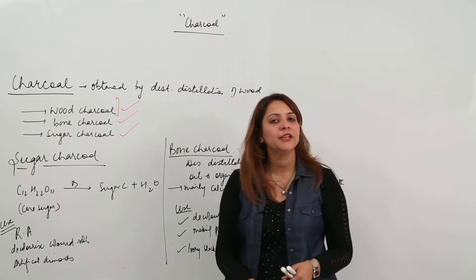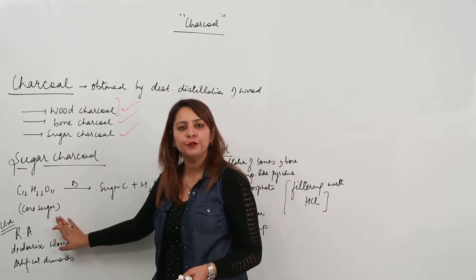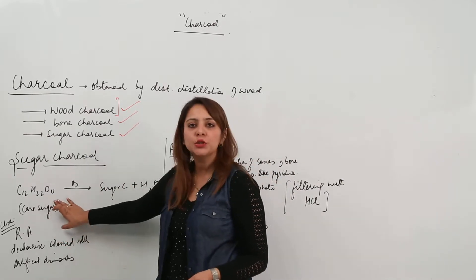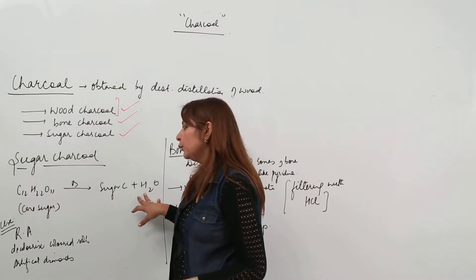Next we have the other kind of charcoal, that is sugar charcoal. We can obtain it by the destructive distillation of cane sugar. We know that cane sugar has sucrose C12H22O11. So when we heat it, we get sugar charcoal and along with that we get water.